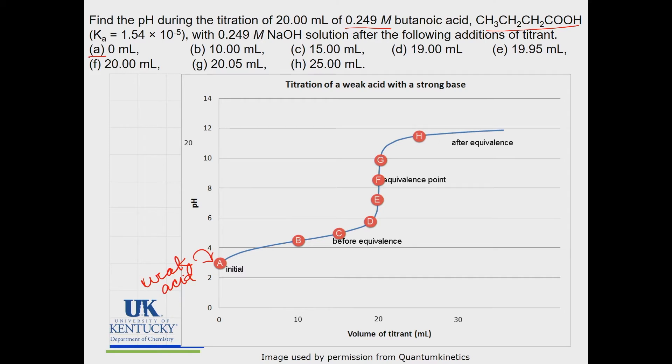Then we start adding some of the base. When we add 10 milliliters of base we get to this point right here, and when we add 15 milliliters we're at this point here, and then 19 is getting close to the equivalence point. In this region right here we will have converted some of our weak acid to its conjugate base and we will have a buffer during this region.